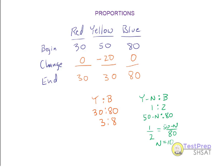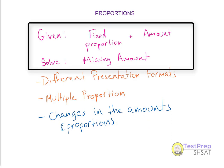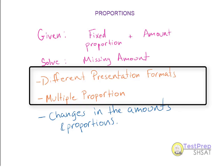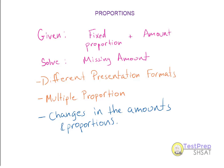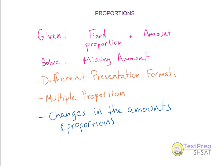Note that one way to organize your problem for a change is to set up a table with the different things, a beginning, a change, and an end. We started with a simple fixed proportion, learned different presentation formats, added the complexity of multiple proportions, and then learned how to handle changes in amounts. This same framework can be applied to most proportion problems on the exam. I hope this helped — don't forget to practice what you learned. Good luck.